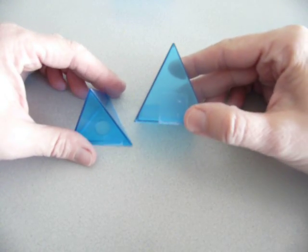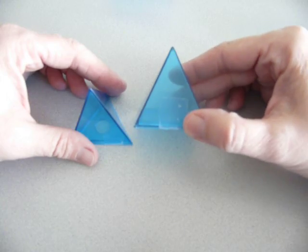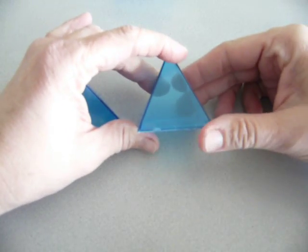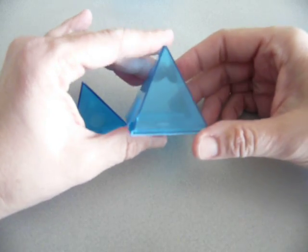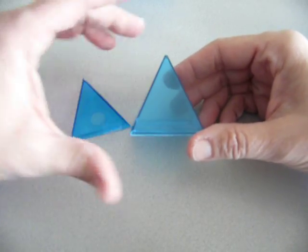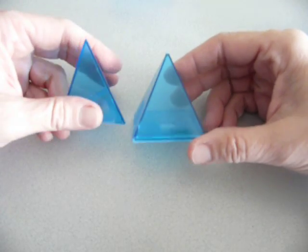Notice also with the rectangular pyramid, all of the faces except for the base are triangles. So even though it's a rectangular pyramid, it has four triangles on it.